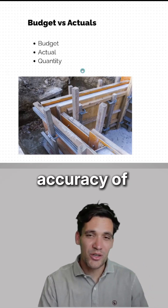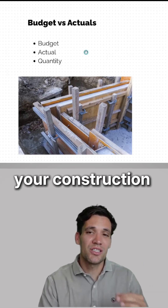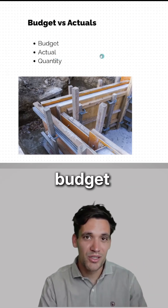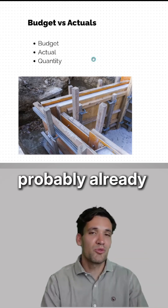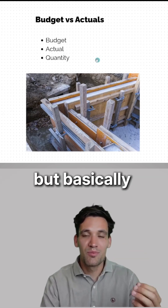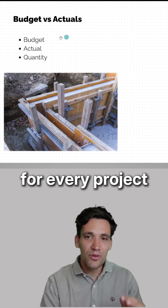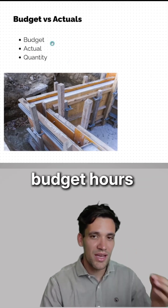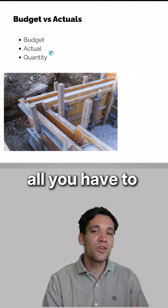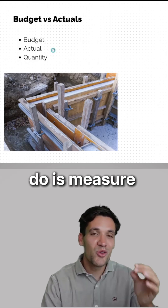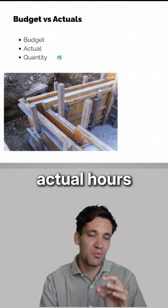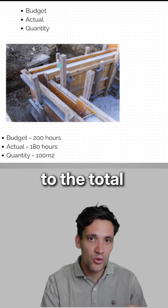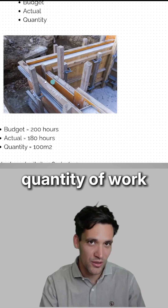You can massively improve the accuracy of your construction estimates with a simple concept of budget versus actuals. Probably already know what it is, but basically for every project you should know your budget hours from your estimate. All you have to do is measure your actual hours per task and match that to the total quantity of work.